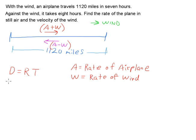This distance is the same for both of those. So this distance of 1120 miles equals the rate in one way, and that's A plus W times the time. The time going with the wind is 7 hours. So we've got that formula.